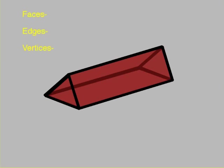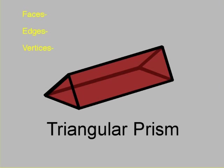Pause the video, come back when you're ready. This guy here, it's a triangular prism. And again, this figure has five faces, nine edges, and six vertices.